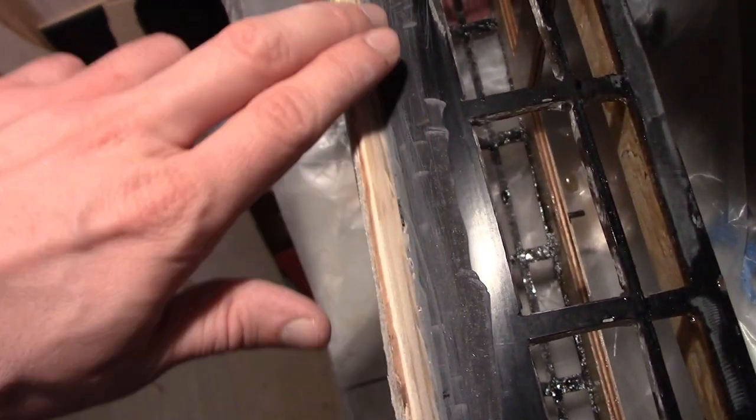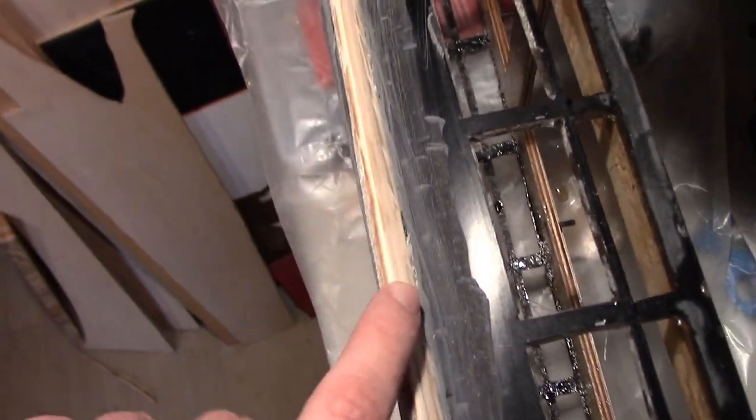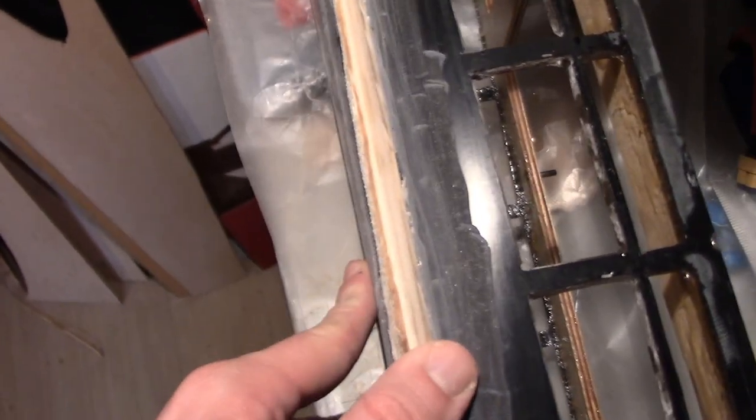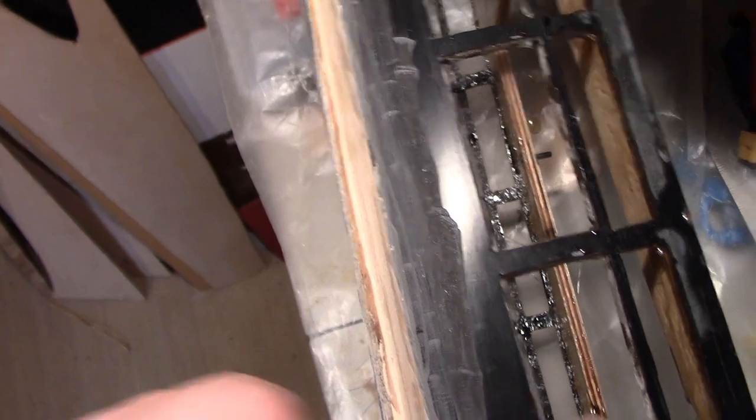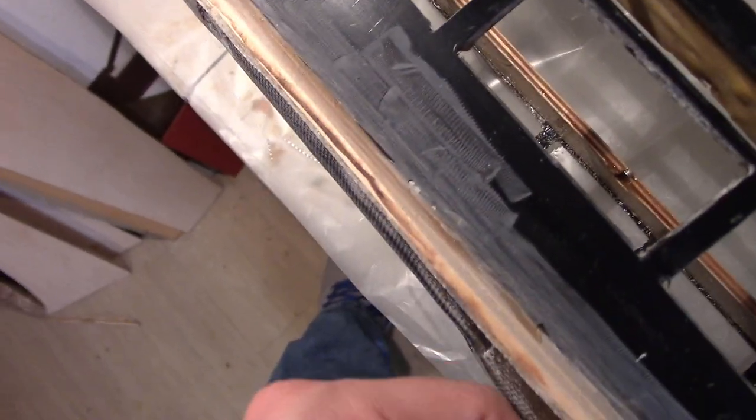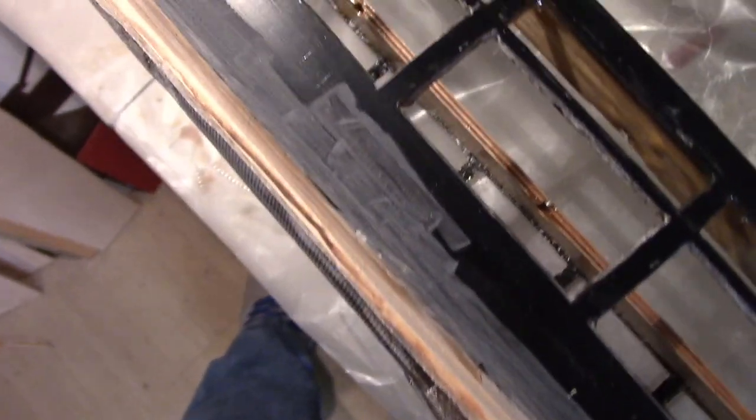So now the plan will be to just cut fiberglass strips to put down here, and then probably put one layer of mat, one layer of cloth. This is pretty strong now, so the wood's really just kind of the filler where the fiberglass is providing the real strength on this.